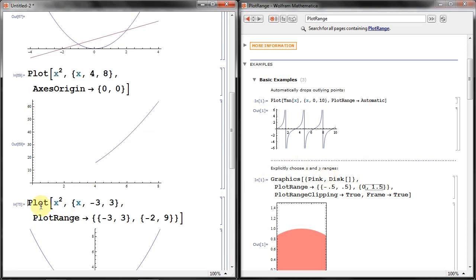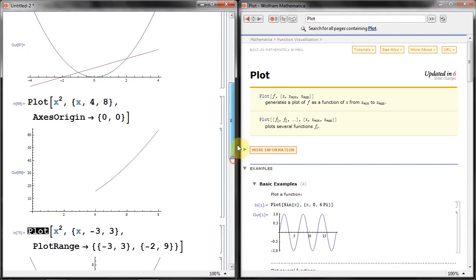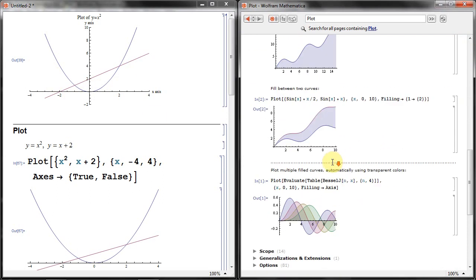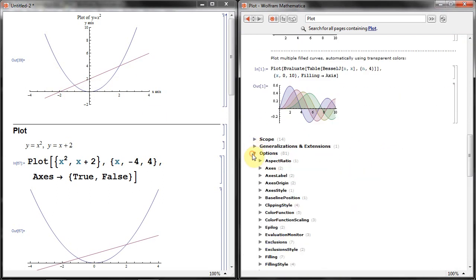And again, there are lots of different options. So I haven't shown you, in fact, what was on here, how to get the labels, for example, how to name the graph here. And you can also change the color of the axis, the thickness of the lines, and things like that. So all of that is shown here. If you look at options here, there are lots of different things.